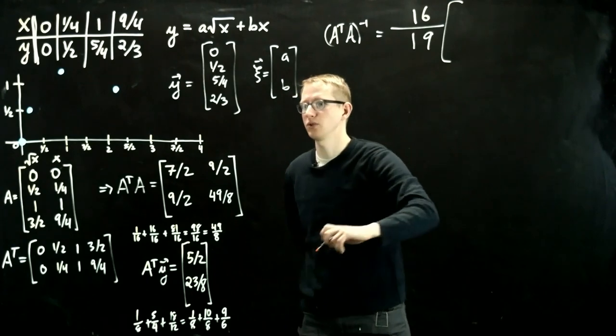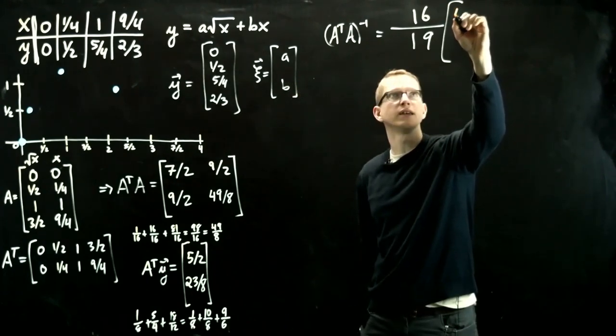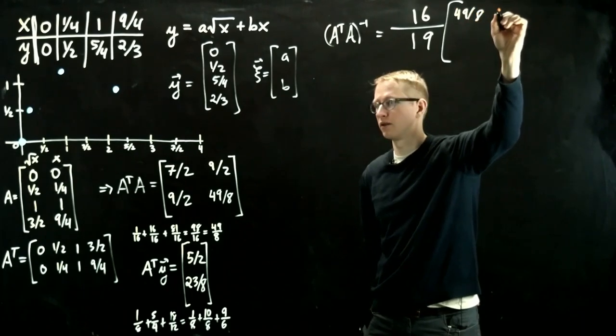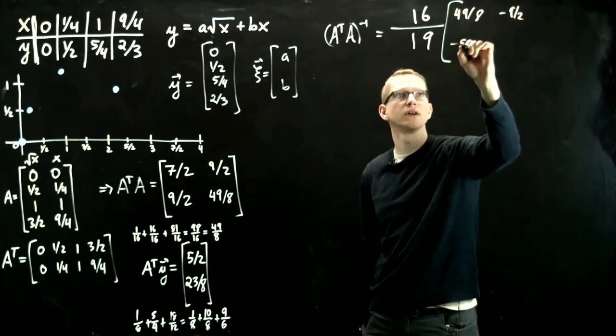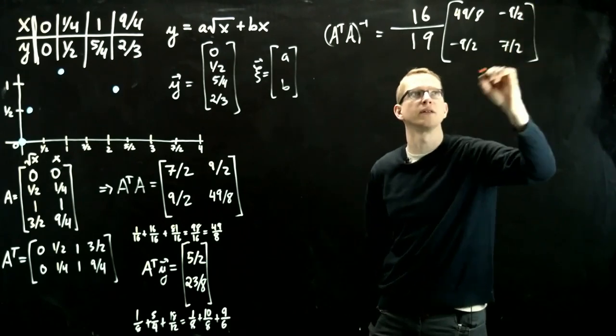And then the adjugate of this matrix, so it's 49 eighths, negative 9 halves on the off diagonal, and 7 halves on this part.